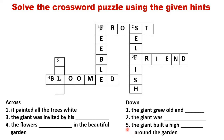Now let's do part five: the giant built a high blank around the garden. What did the giant build? Yes, he built a wall. The spelling of wall is W-A-L-L. Well done. I hope you all had fun solving this crossword puzzle.